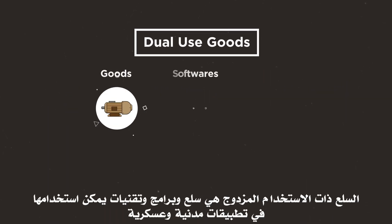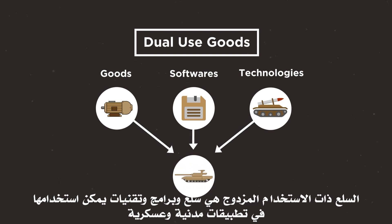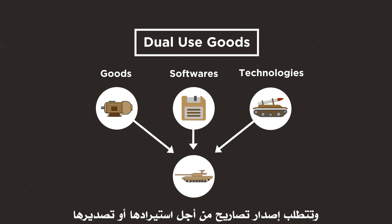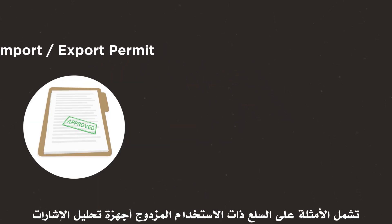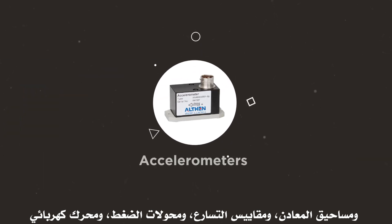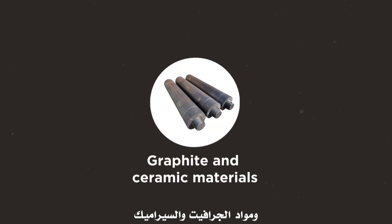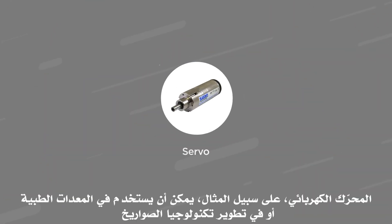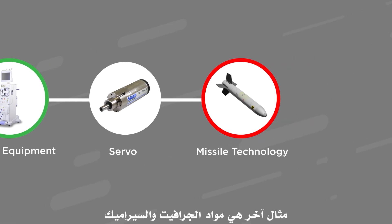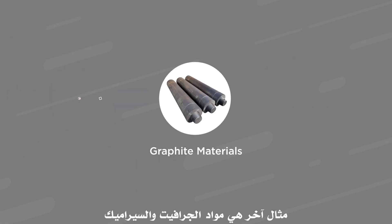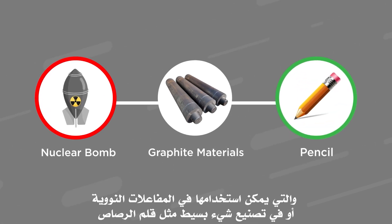Dual-use goods are goods, software, and technologies that can be used in both civilian and military applications, and generally require permits in order to be imported or exported. Examples of dual-use goods include signal analyzers, metal powder, accelerometers, pressure transducers, servos, and graphite and ceramic materials. A servo, for example, may be used in medical equipment or in developing missile technology. Other examples include certain graphite and ceramic materials, which can be used in nuclear reactors or in manufacturing something as simple as a pencil.